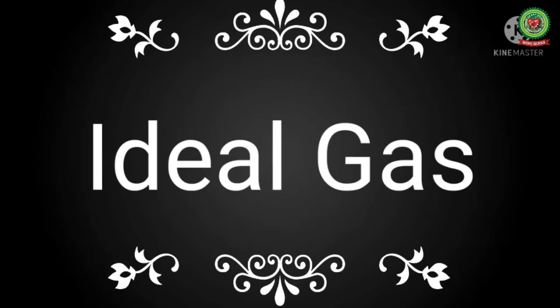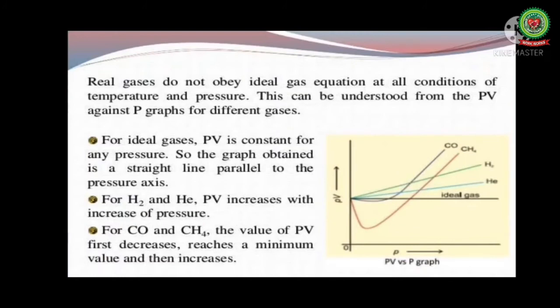Gases which strictly follow the ideal gas equation PV equals nRT are called ideal or perfect gas. Actually no gas is ideal or perfect in nature. Under ordinary conditions real gases do not obey ideal gas equation at all conditions of temperature and pressure. For ideal gases PV equals constant for any pressure, so the graph obtained must be a straight line parallel to the pressure axis.